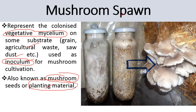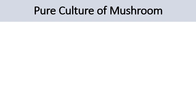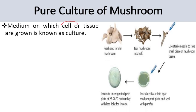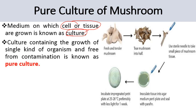Next comes pure culture of mushroom. As the name indicates, pure culture means it is obtained from spores or tissues of a single organism, a single fungus. The medium on which cells or tissues are grown is known as culture medium. That culture medium contains the growth of a single kind of organism, and is free from contamination — this is known as pure culture.